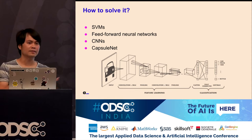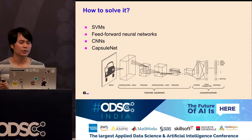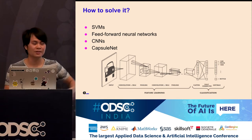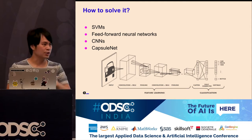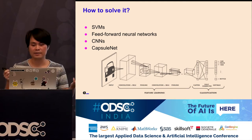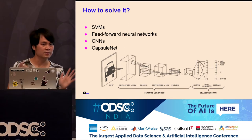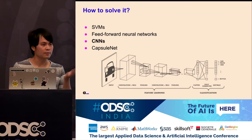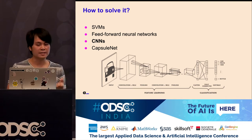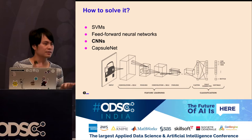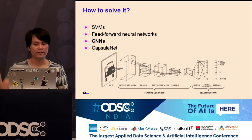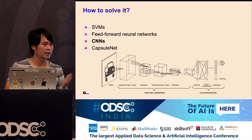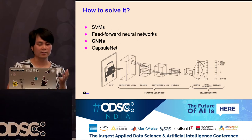How can you solve it? There are many solutions: support vector machines, feed-forward neural networks, convolutional neural networks, CapsNets. There are many solutions, but we mainly focus on CNNs because we're in industry — we need a trade-off between fast models and good accuracy. We can't use state-of-the-art CapsNet models for many use cases because CapsNet is too slow.